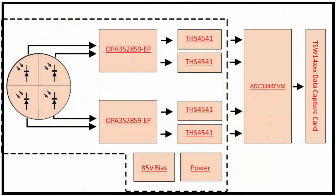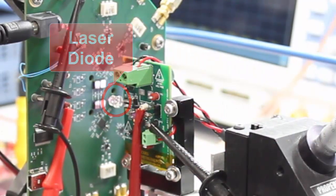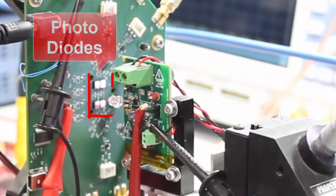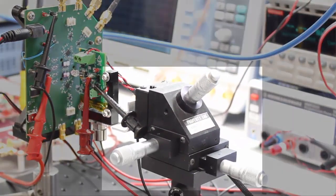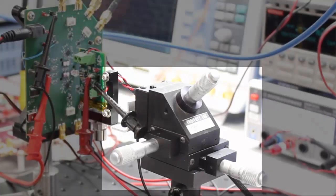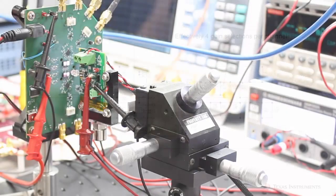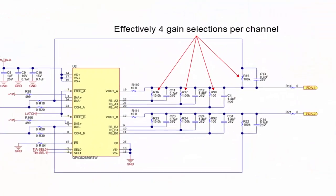In our current system, attenuation is performed by positioning the laser diode off-center with respect to the photodiode array. We slide the laser diode in a single direction using a three-axis linear stage, increasing the amount of received light and therefore sinking current. Initially, our laser operates under a high attenuation, representing a long distance to target.